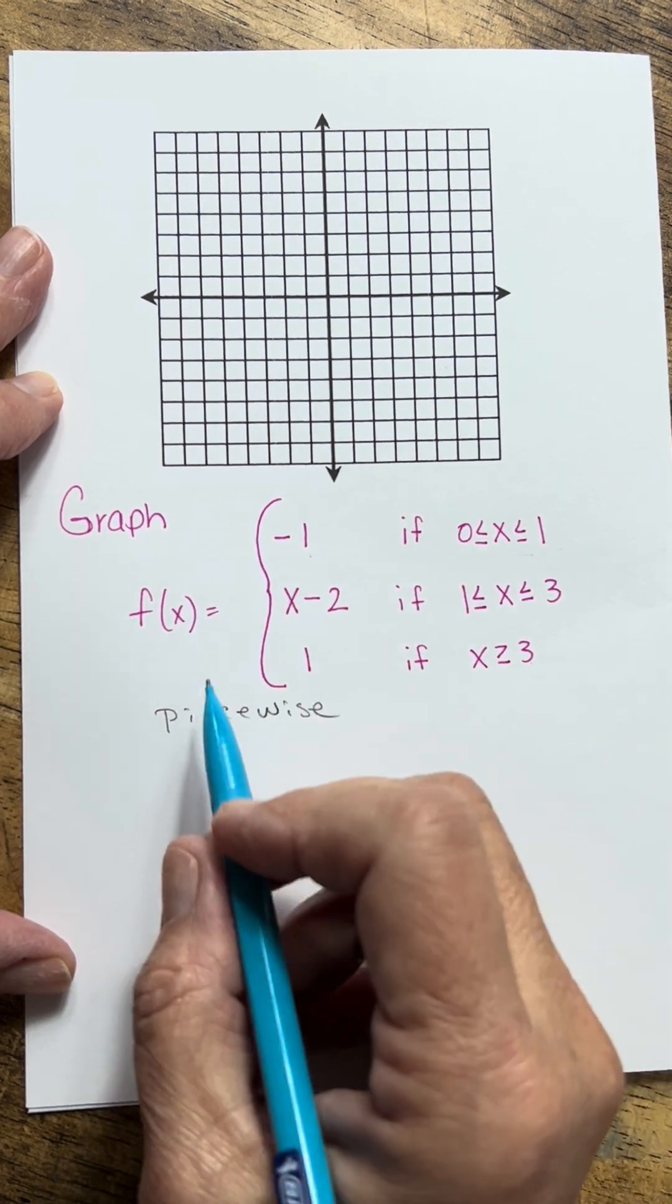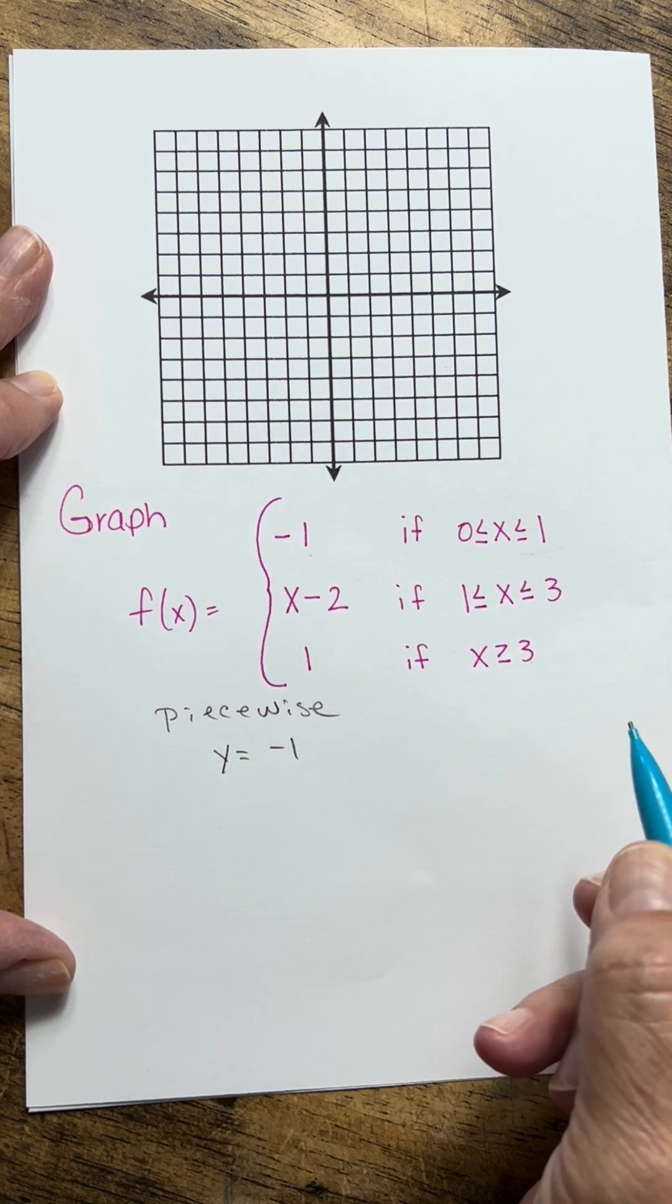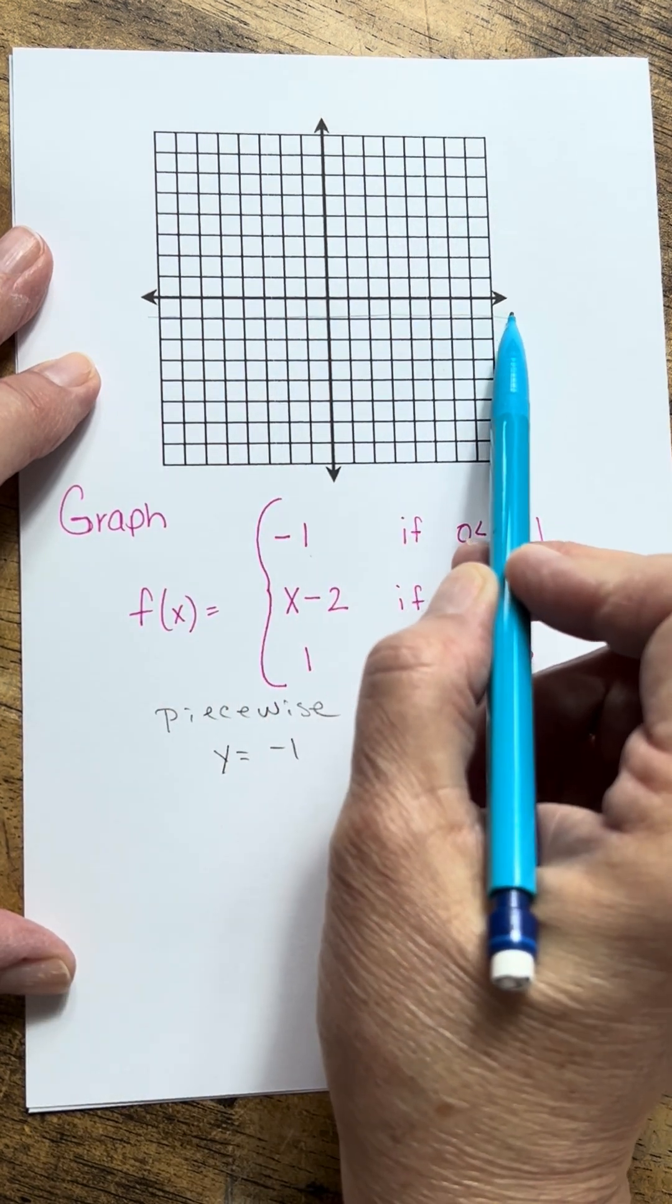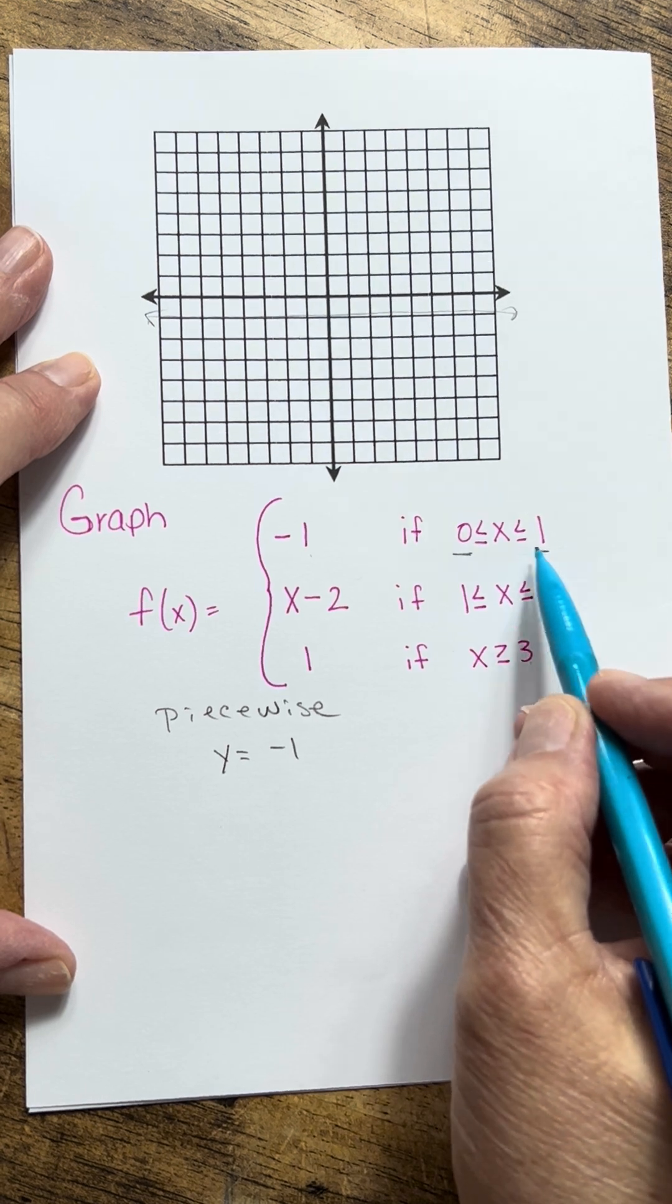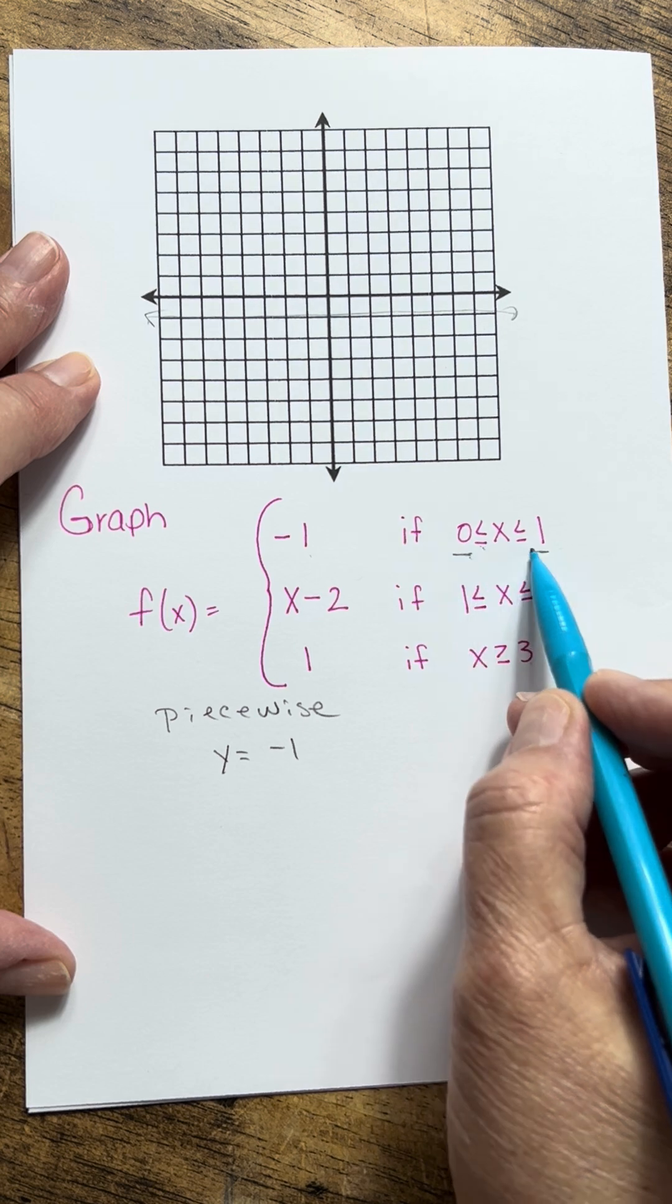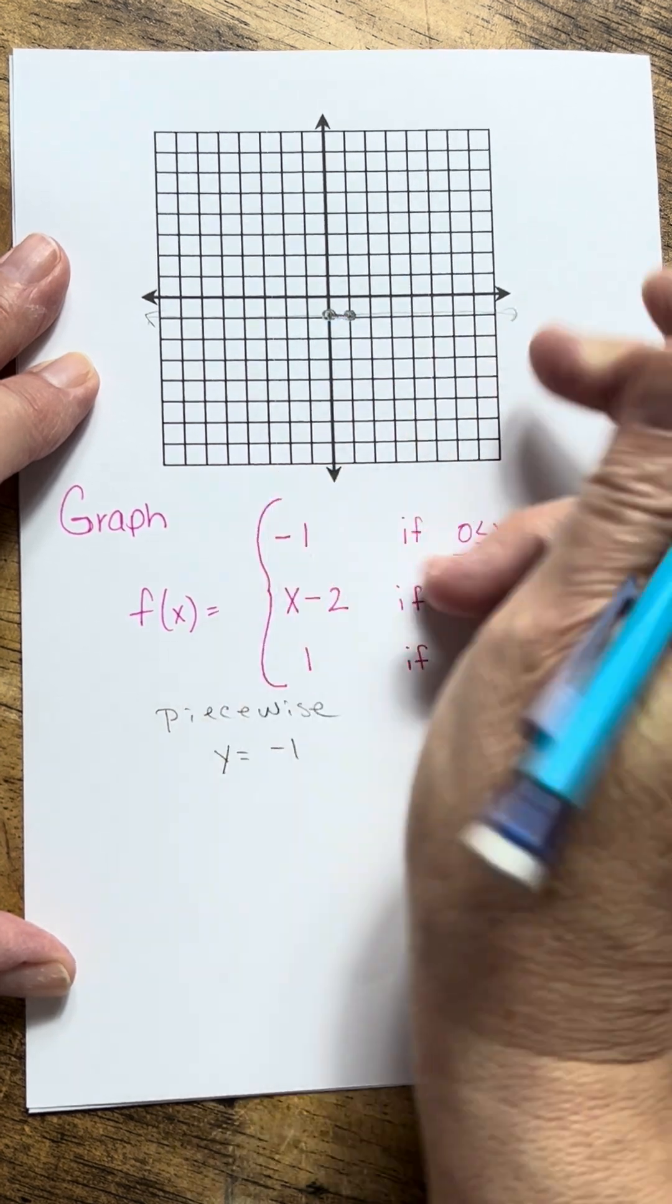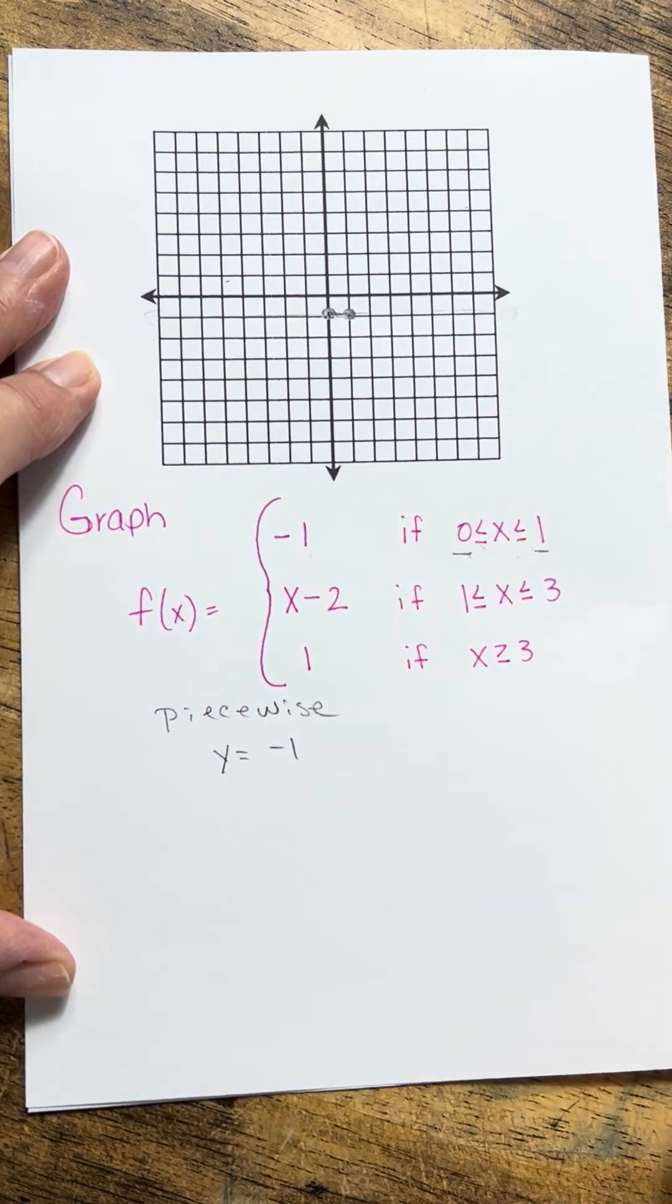So first of all, if I take f of x is equal to y is equal to negative 1, or y equals negative 1, well that's just a horizontal line at negative 1. It would go all the way across here if I graphed the whole thing. I just want the part that is in between 0 and 1, and since it has the less than or equal to signs, I'm going to put closed dots at those two points and graph that, and then you can actually just erase the rest of your graph. You don't need that.